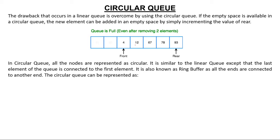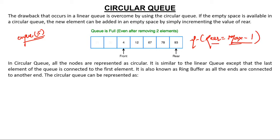Consider this queue. Is this queue full? No — there are two spaces which are still vacant. Suppose I call an enqueue operation with element 5. Will I be able to enter it in a linear queue? No, because a linear queue says if rear is equal to max-1 — the size of the queue — then the queue is full, even if there are vacant spaces. Once rear reaches max-1, you cannot insert. Even if you delete all other elements and have 5 vacant spaces, since rear is at max-1, it will say the queue is full. This was the biggest drawback of linear queue.